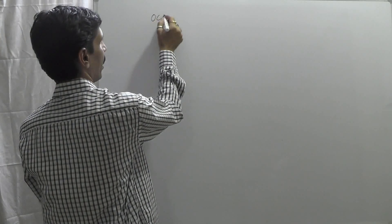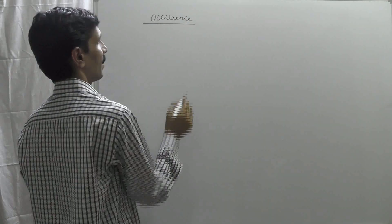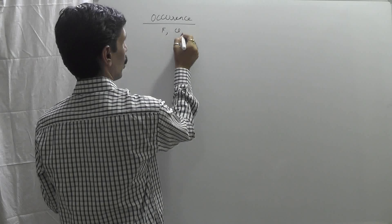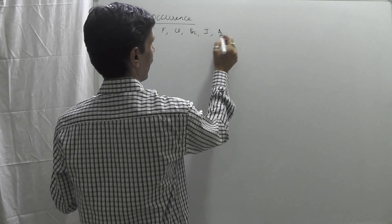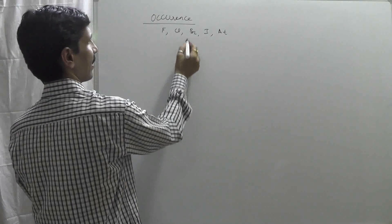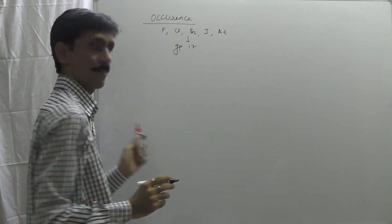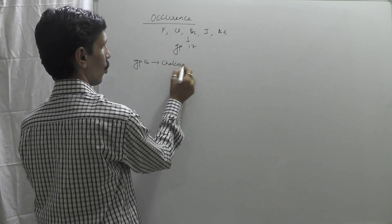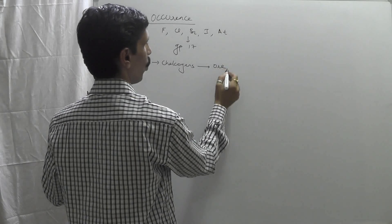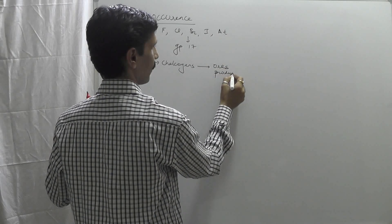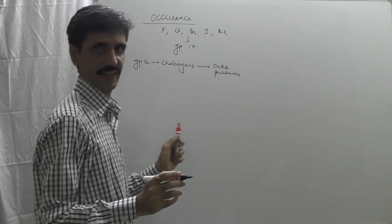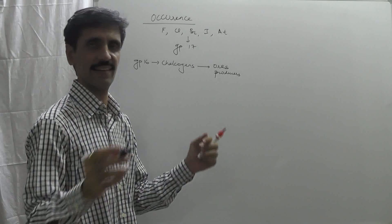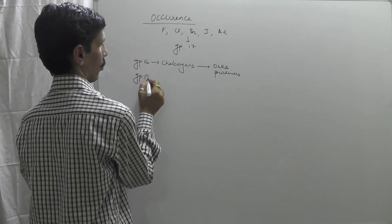Now we consider group number 17, still discussing occurrence. The elements are fluorine, chlorine, bromine, iodine, and astatine — these constitute group 17. Regarding group 16, those elements are called chalcogens because they have an ability to form ores — they can combine with metals to form oxides, sulfides, sulfates, and so on. Group 17 elements are called halogens, meaning salt producers.